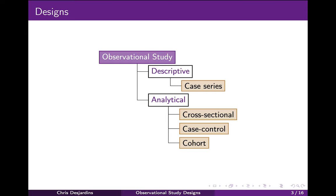Research designs can be divided into two broad categories: observational studies and experimental studies. In an observational study, the researcher does not assign exposures to participants. The exposure is the agent under investigation that is thought to be related to the outcome being measured — in other words, the explanatory variable. The word 'exposure' will be used throughout to refer to the explanatory variable, as it is commonly used in public health.